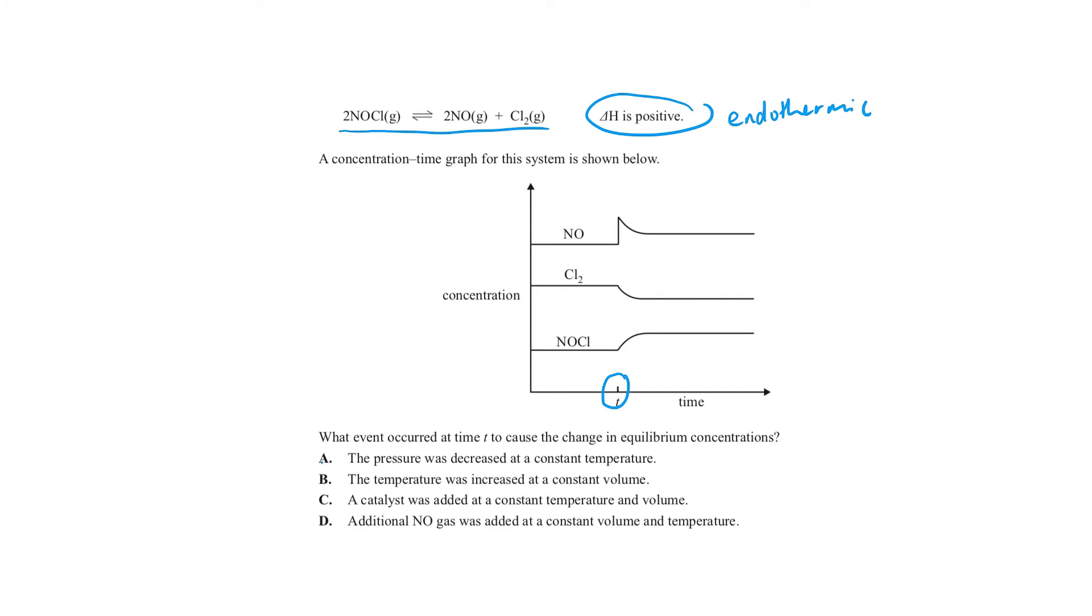So could A be correct? A says that the pressure was decreased at a constant temperature. Now, if our pressure was decreased at a constant temperature, our equilibrium would shift to the side with less particles. So in this case, it would favour the back reaction.